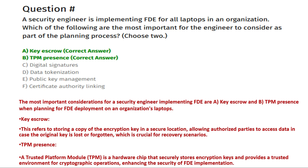The correct answers are Option A: key escrow, and Option B: TPM presence. Key escrow refers to storing a copy of the encryption key in a secure location, allowing authorized parties to access data in case the original key is lost or forgotten — crucial for recovery scenarios. TPM presence: a Trusted Platform Module is a hardware chip that securely stores encryption keys and provides a trusted environment for cryptographic operations, enhancing the security of FDE implementation.